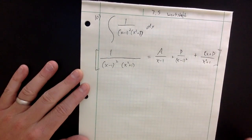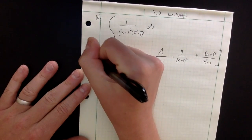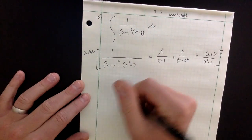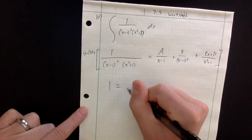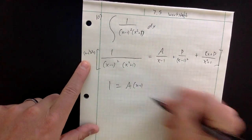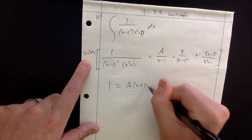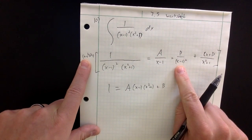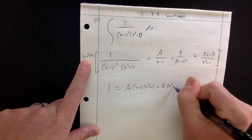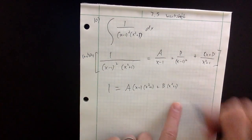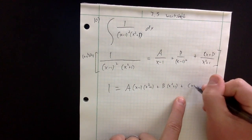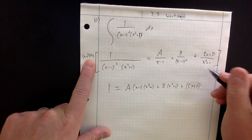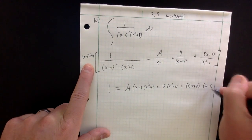I'm going to clear out the denominator by multiplying everything by (x minus 1) squared times (x squared plus 1). On the left side everything cancels except the 1. On the right, A gets an (x minus 1) and (x squared plus 1) remaining; B has (x squared plus 1) remaining; and (Cx plus D) is left with (x minus 1) squared.